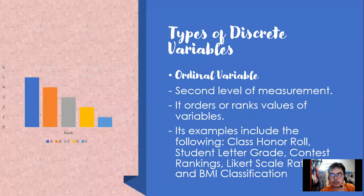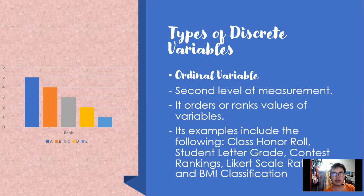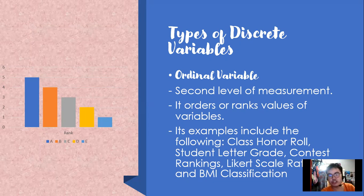When we say ordinal variables, it is the second level of measurement. It involves ordering and ranking values of a variable. Examples include class honor roll — who is first honor, second honor, third honor. Student letter grades: A, B, C, D — from pass to fail. Contest ranking: grand champion, first runner up, second runner up. Likert scale: 5 to 1, from very satisfactory to very unsatisfactory. BMI classification: from morbidly obese to underweight. So these all have order.